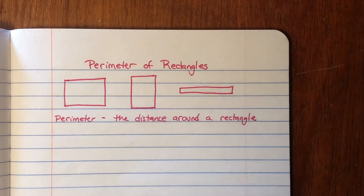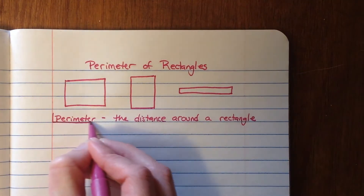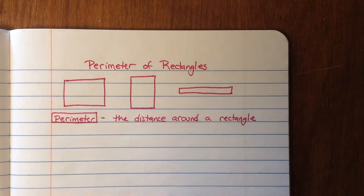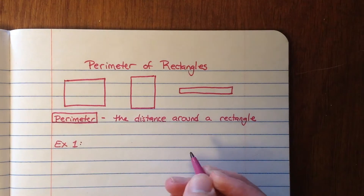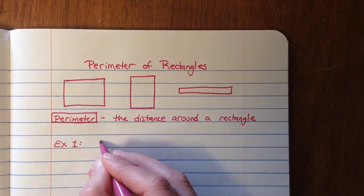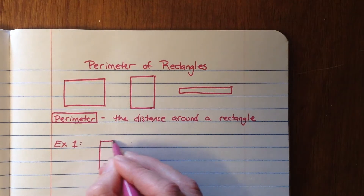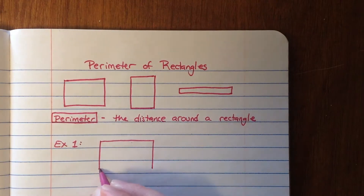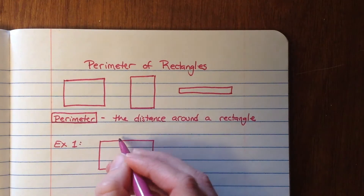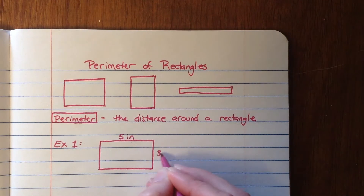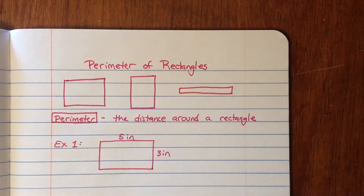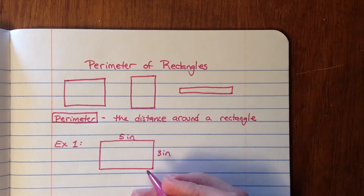So we're going to write that definition down: perimeter is the distance around a rectangle. We're going to look at some examples of what it's going to look like to calculate the perimeter of a rectangle. For example number one, let's say we're given a rectangle and we are told that this side is a measurement of five inches and this side is a measurement of three inches.